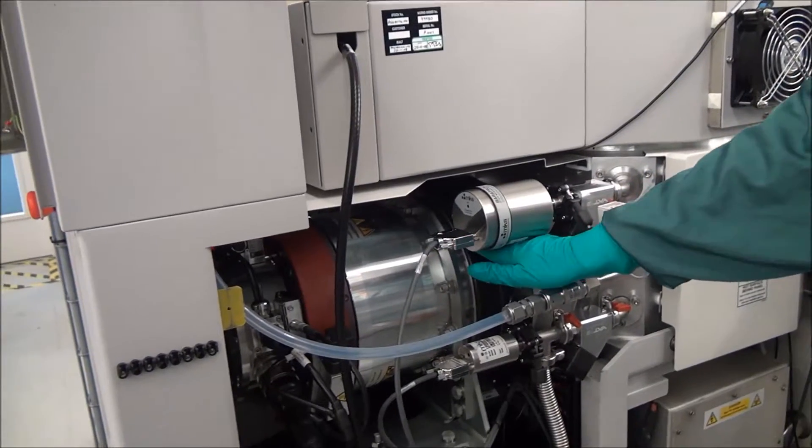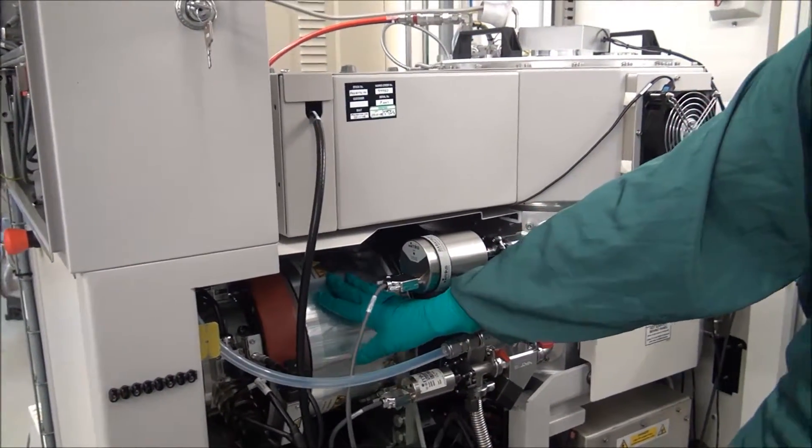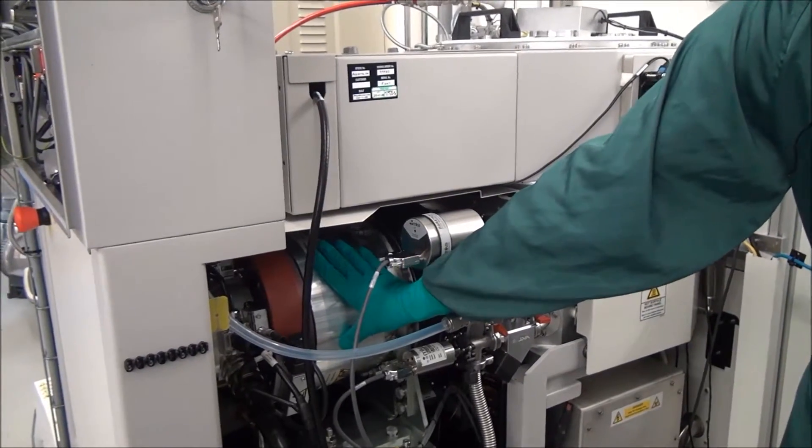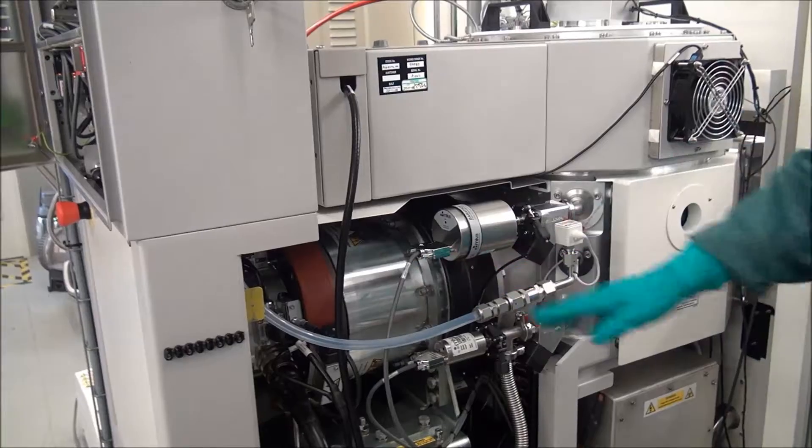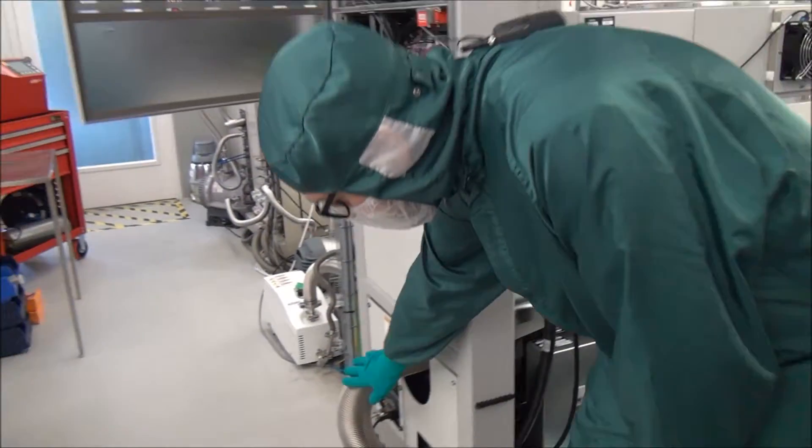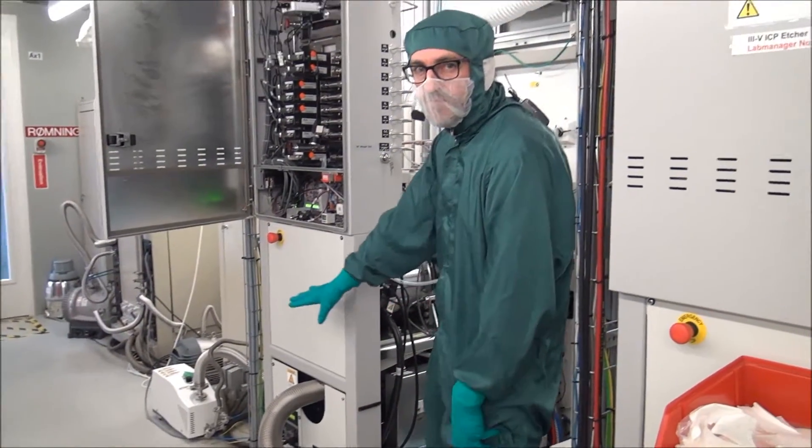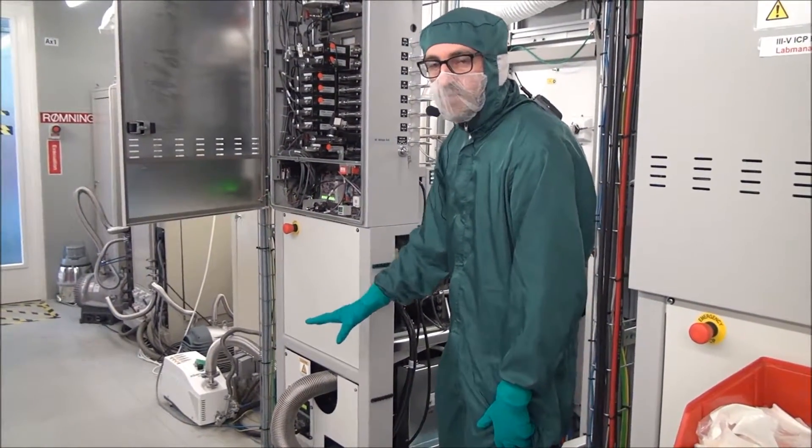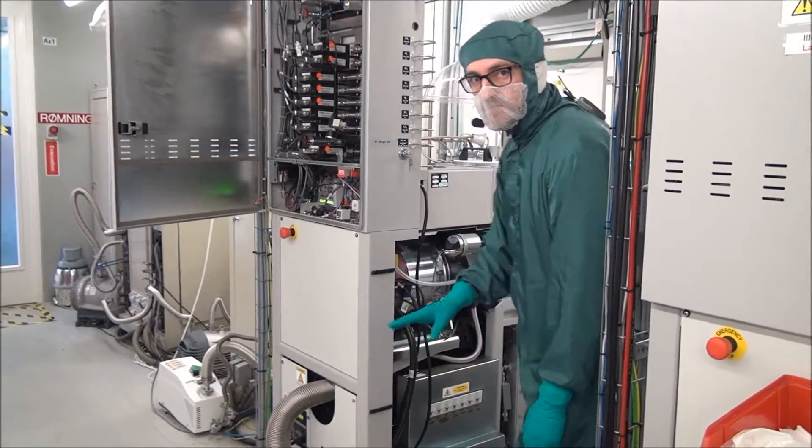Behind the main pressure controller we have a turbo from Leybold which is also heated because of the corrosive gases. And then if we follow behind the turbo you can see here we have a pump line which is actually roughly 10 meters in length. It goes into the basement where we have another backing pump located there, and a scrubber of course because of the gases.